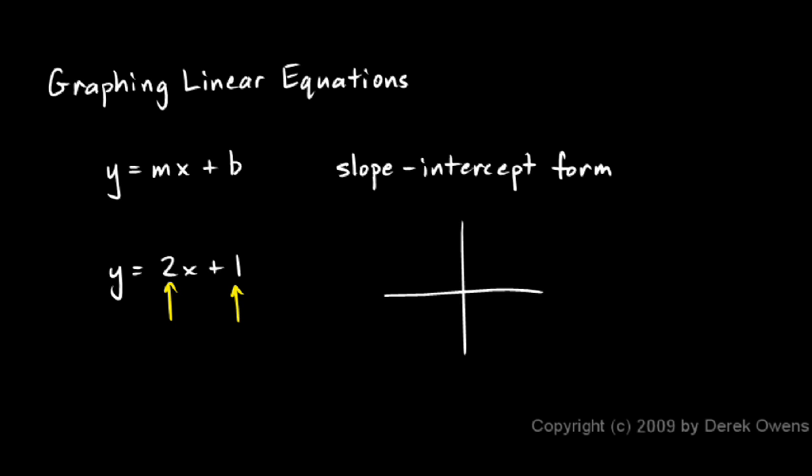So in this case, for example, the y-intercept is 1, so that means this graph will cross the y-axis at 1, right there.